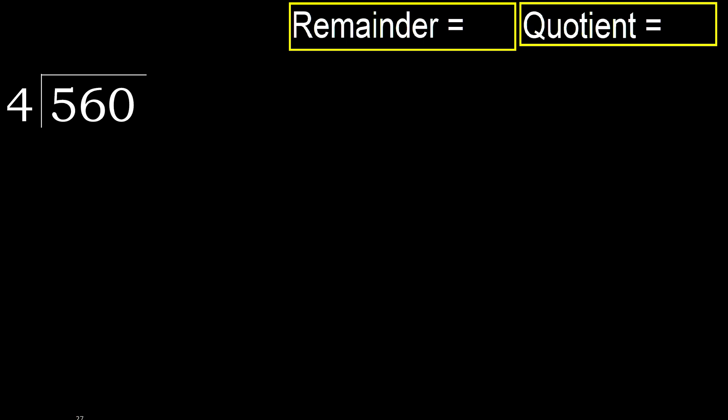560 divided by 4. 5 is not less, therefore with 5: 4 multiplied by which number is nearest to 5 but not greater? 4 multiplied by 2 is 8.